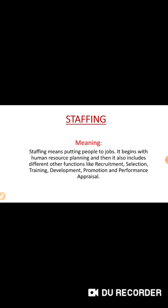Staffing begins with human resource planning. Human resource planning means, before the implementation of staffing, how to make the planning. Human resource planning means planning for the human resources — the employees who are required in the organization — that you have to make a plan for.